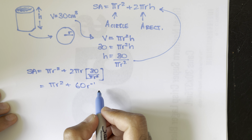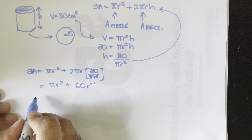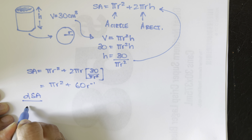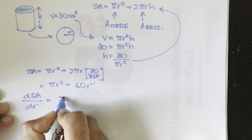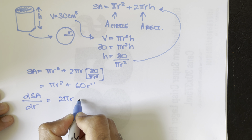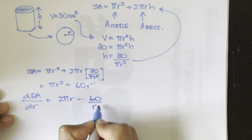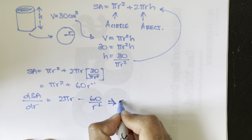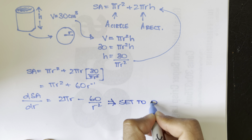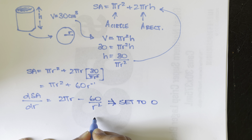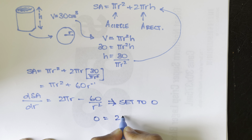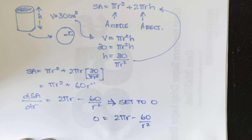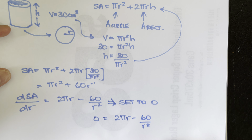This is the function we will optimise by taking its derivative. The derivative of the surface area with respect to r is 2πr − 60/r². We set this equal to zero, giving us 0 = 2πr − 60/r².